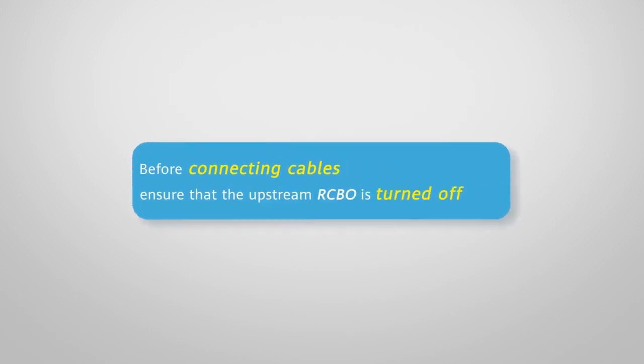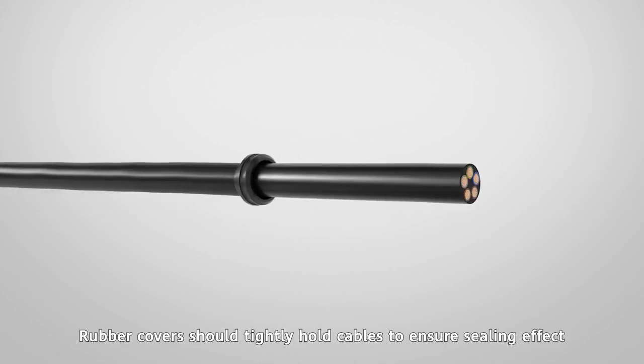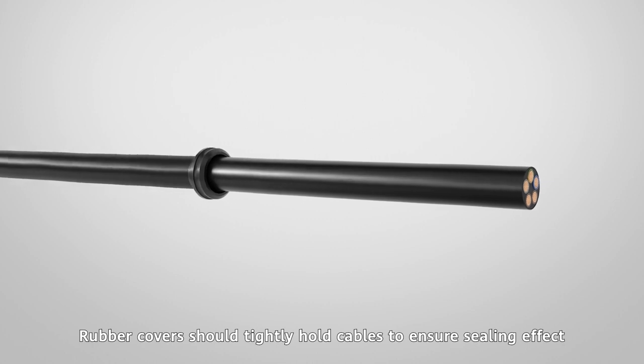Before connecting cables, ensure that the upstream RCBO is turned off. Use scissors to cut the rubber covers to fit the cable sizes. Rubber covers should tightly hold cables to ensure sealing effect.